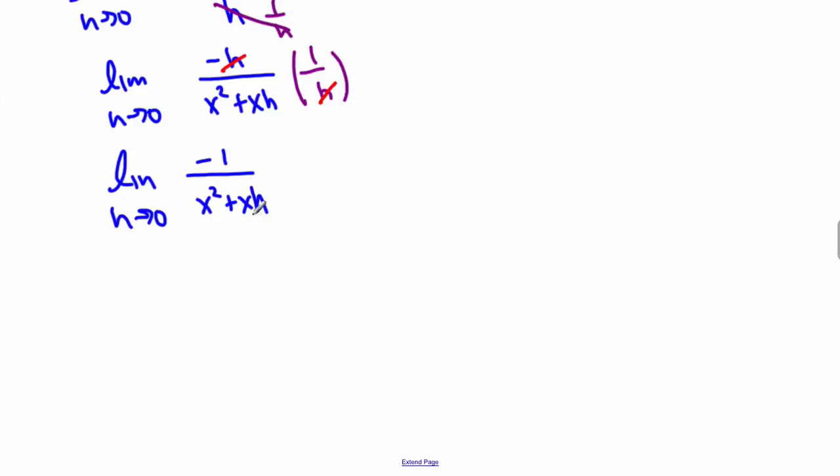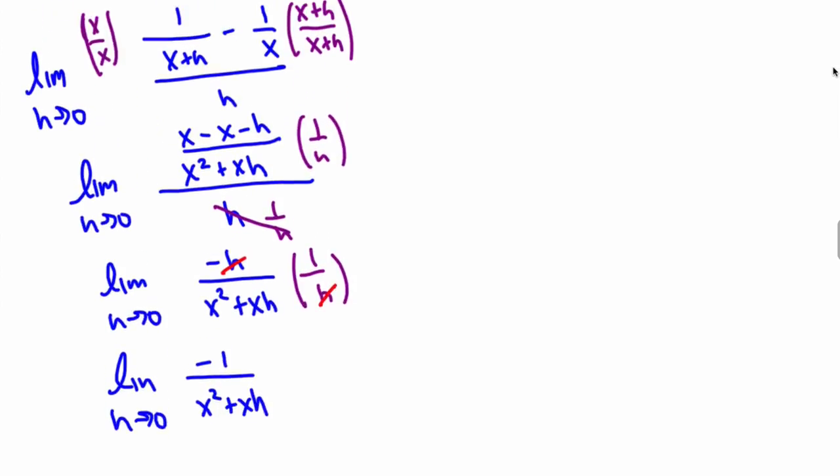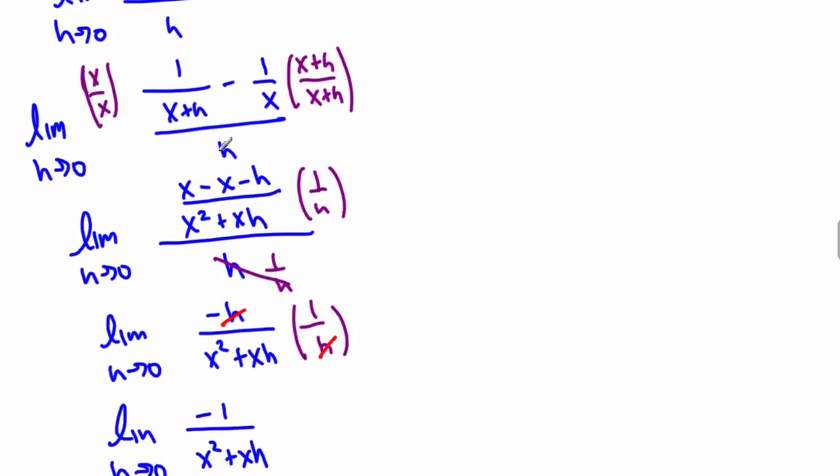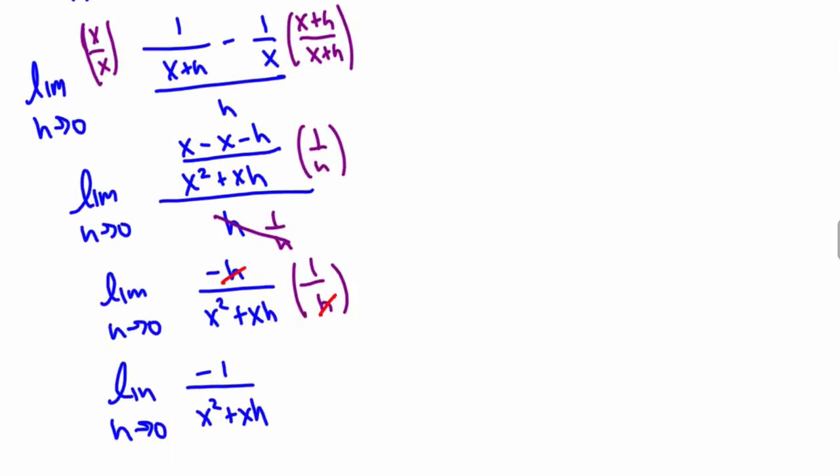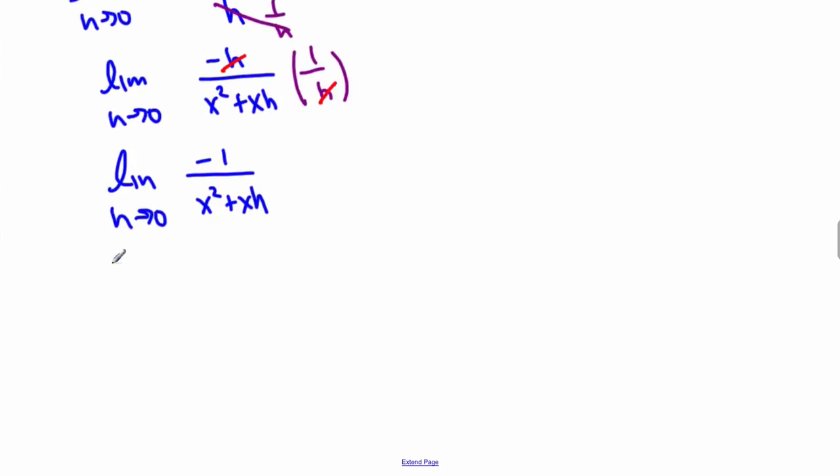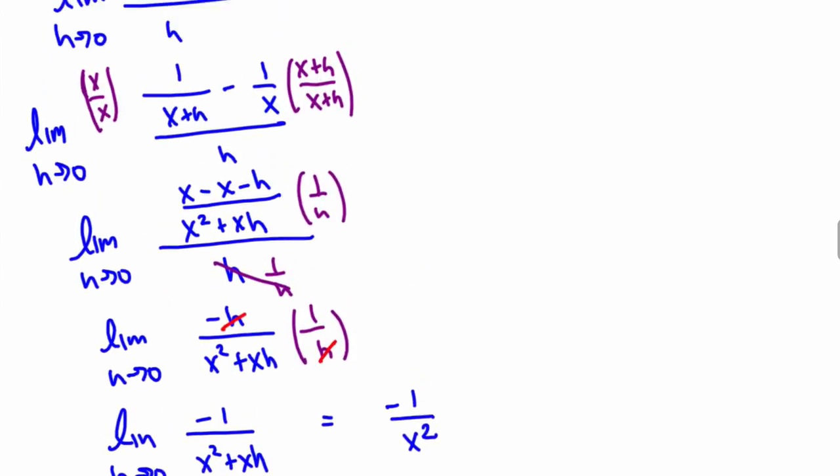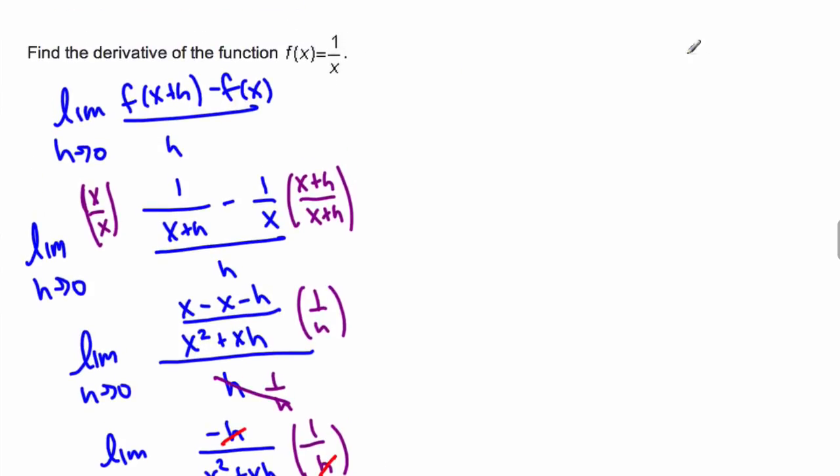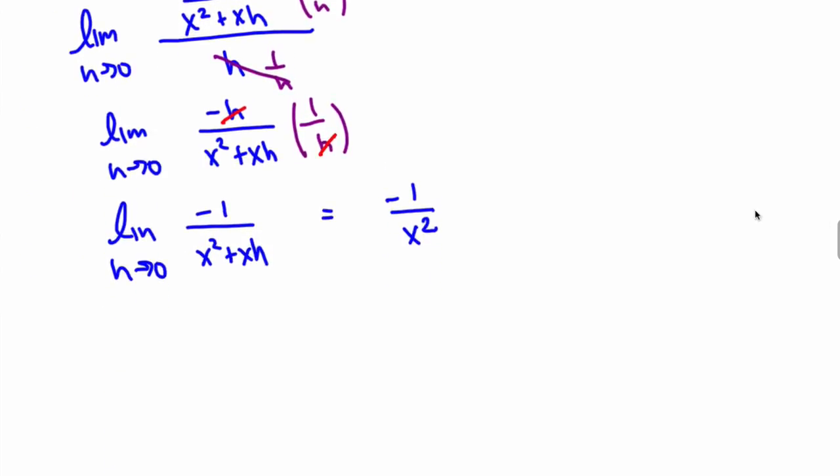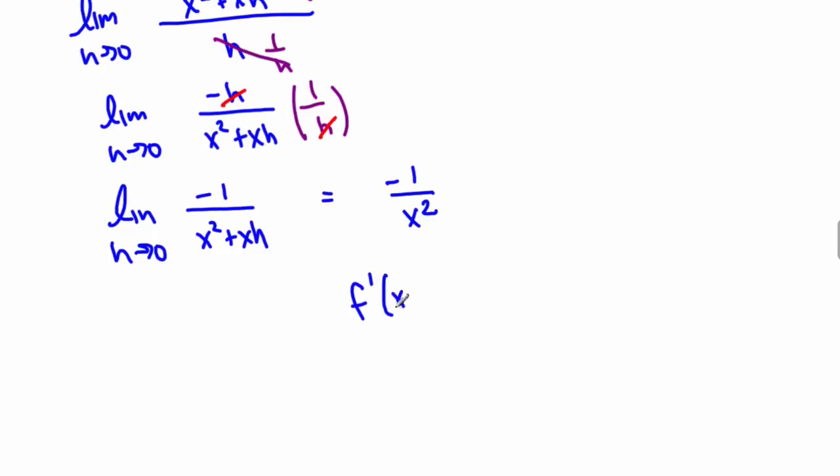Now we can substitute in h as 0, because before, like always, you can't substitute it in right from the start because you'll be dividing by 0, which we cannot do. So now let's substitute in 0, and we're left with negative 1 over x squared, which means the derivative of 1 over x is negative 1 over x squared. We can even write that more appropriately. F prime of x is equal to negative 1 over x squared.